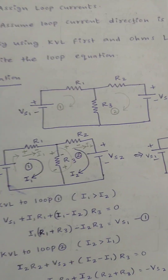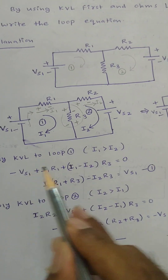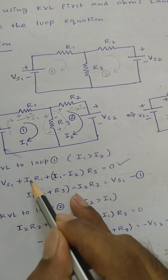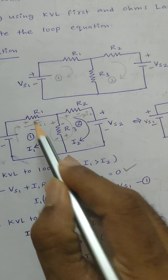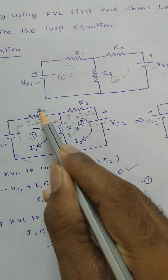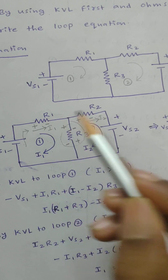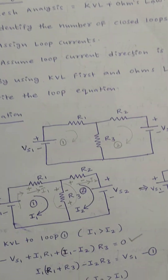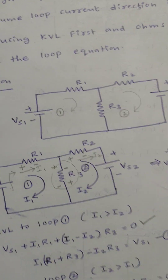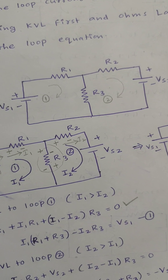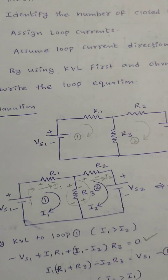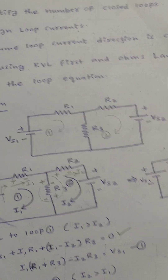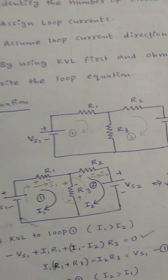In summary, mesh analysis is applying KVL where the voltage across each branch is i into R from Ohm's law. So mesh analysis equals KVL plus Ohm's law. That is about mesh analysis. In the next class we will solve some problems on mesh analysis. Thank you all.